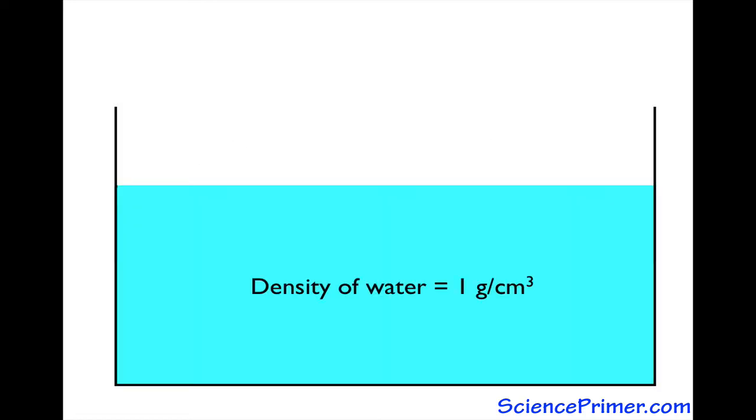Since water has a density of 1 gram per cubic centimeter, a 1 gram object will displace 1 cubic centimeter of water. A 25 gram object will displace 25 cubic centimeters of water.